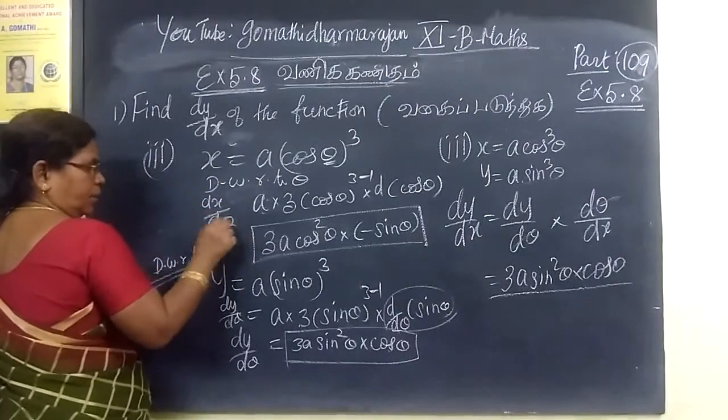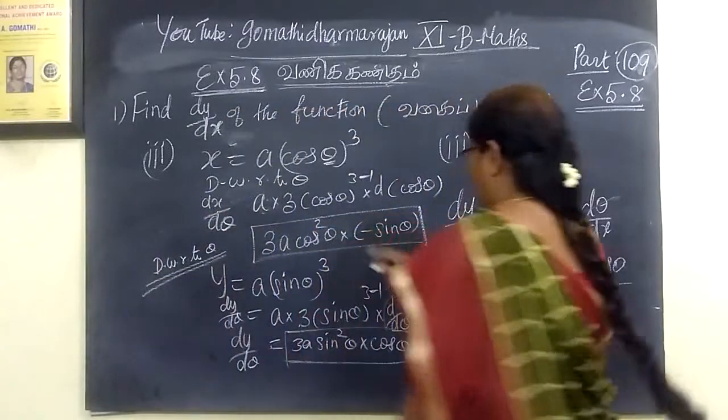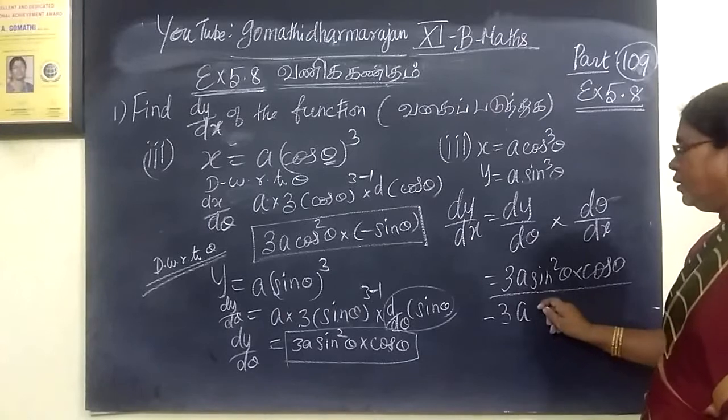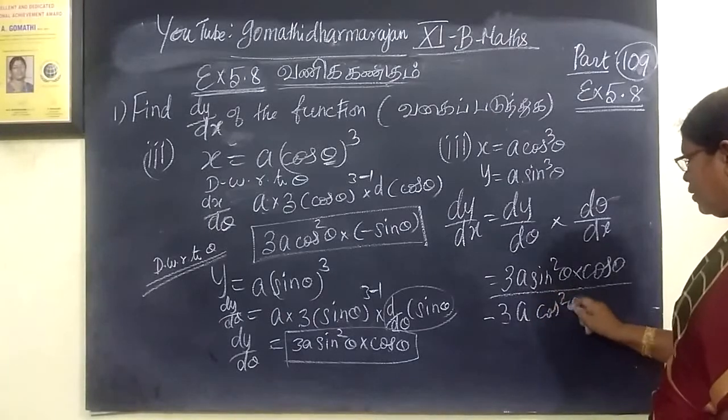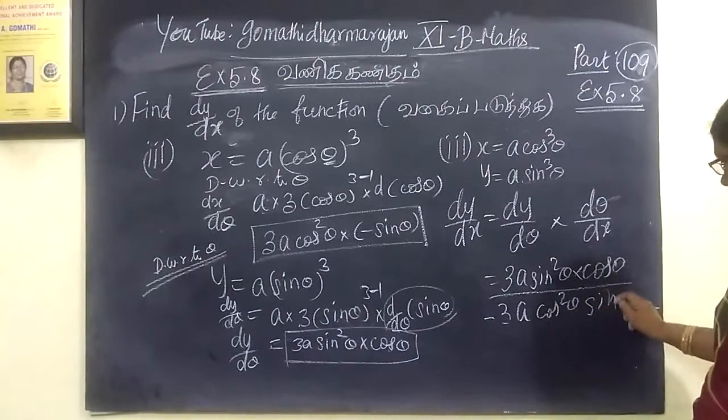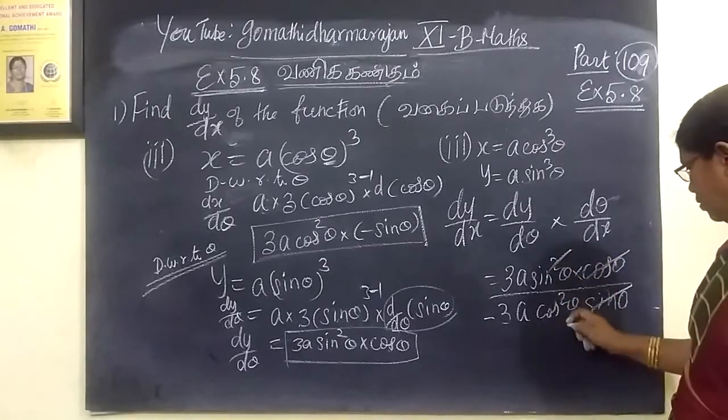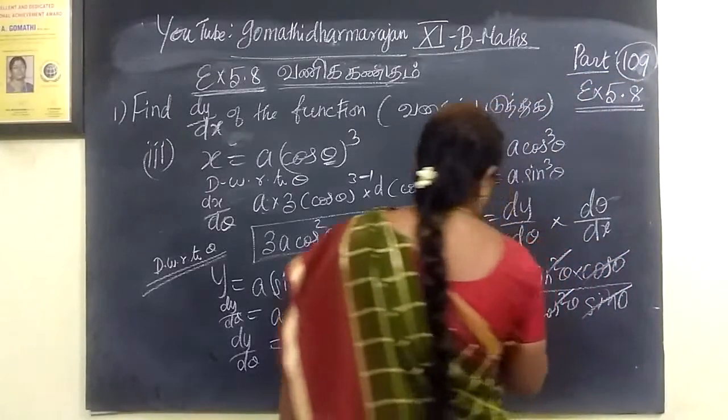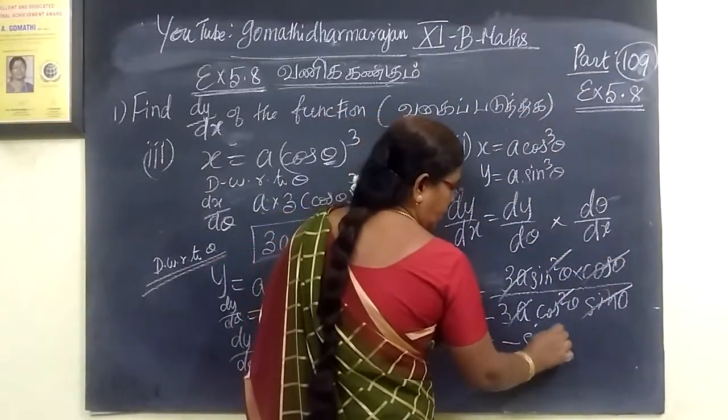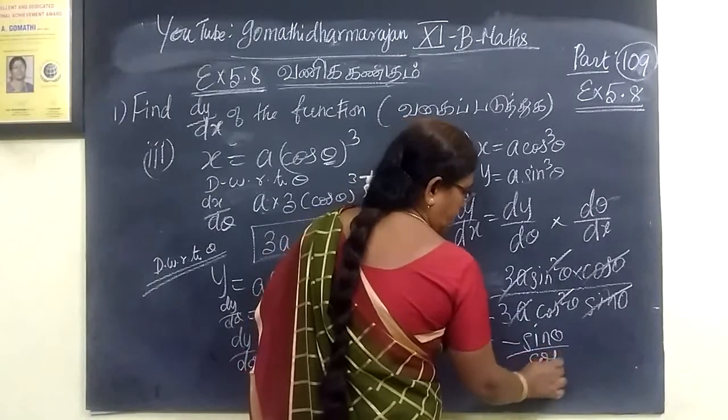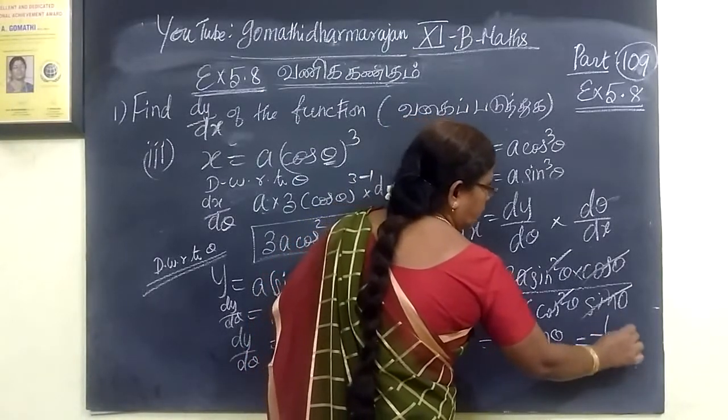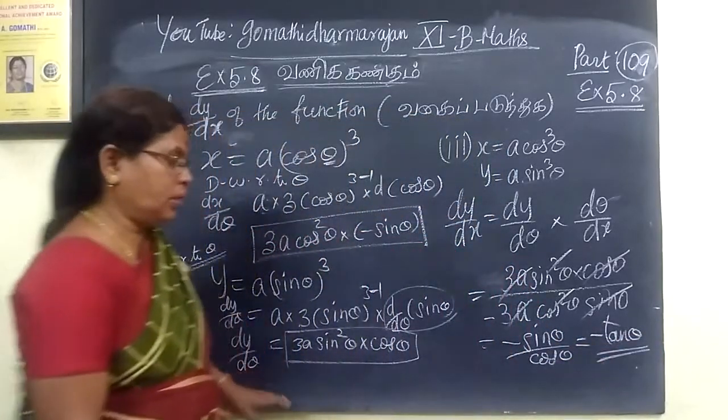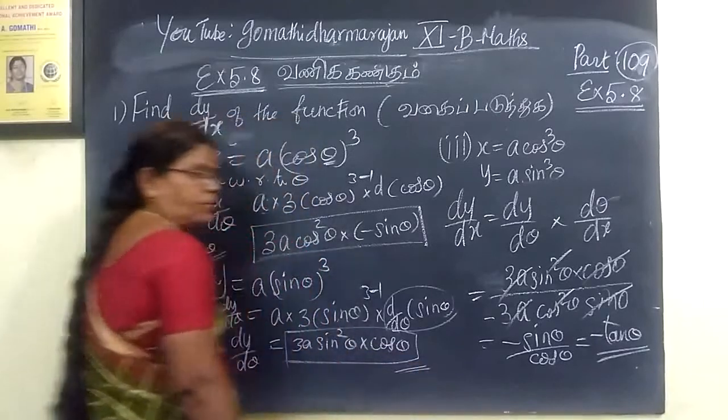Then 3a sine square θ then cos θ by dx by dθ. dx by dθ, then reciprocal. So 3a, you know, minus 3a, then cos square θ then sin θ. Sin one sin cancels. Cos one cos cancels. 3a cancels. So minus sin θ by cos θ equal to minus tan θ.